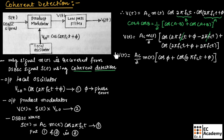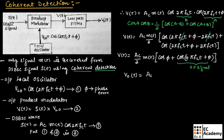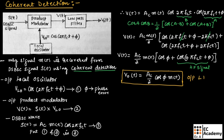This signal is passed through a low-pass filter with frequency centered across f_M. The high-frequency component cos(4π f_c t + φ) will be eliminated, and we will get only the low-frequency signal. Therefore, the output of the low-pass filter is V_0 of T = (A_c / 2) cos φ · M of T. The demodulated signal is directly proportional to the message signal M of T.